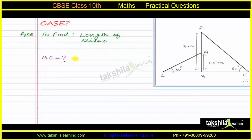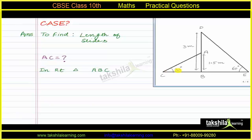First, we will find AC — the length of the slide for children below the age of five years. In right triangle ABC, we know the angle is 30 degrees and the length of AB is 1.5 meters. For the angle of 30 degrees, AB is the opposite side and AC is the hypotenuse, so we will make use of the sine ratio.